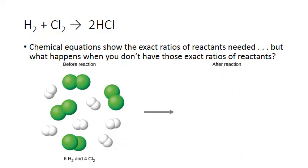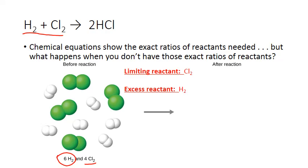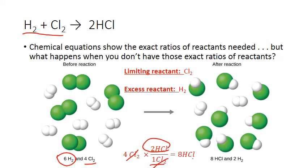Now let's return to our chemical recipe. Applying the ratios from the chemical equation — one molecule of chlorine for every one molecule of hydrogen — we don't have enough chlorine to react with all of the hydrogen gas present. Chlorine will be our limiting reactant and hydrogen will be our excess. We can use stoichiometry to predict how much hydrogen chloride gas will form, starting with the limiting reactant and using the coefficients from the balanced equation: one chlorine for every two hydrogen chloride. So we should have eight hydrogen chloride gas molecules, with two hydrogen molecules left over.